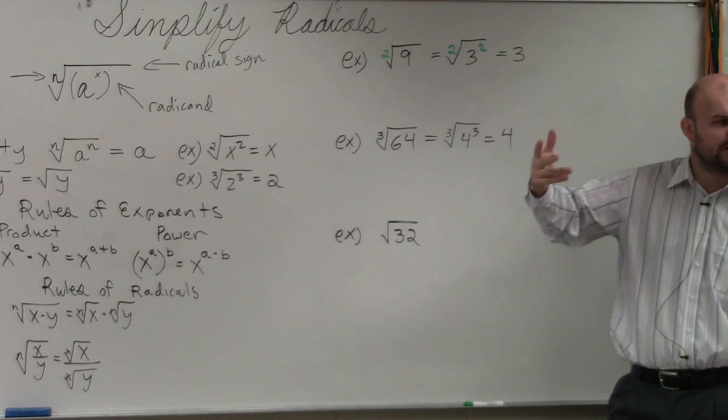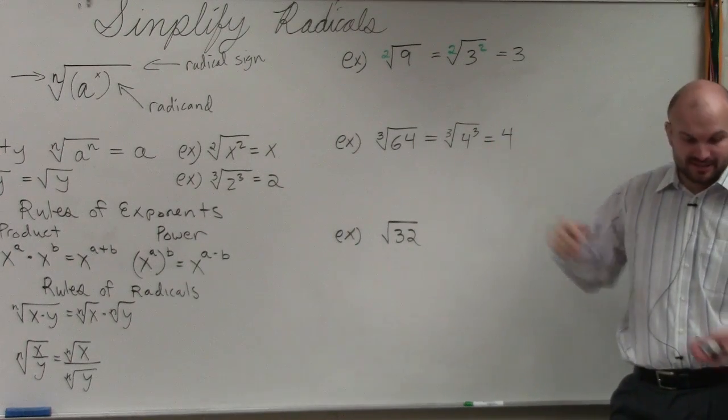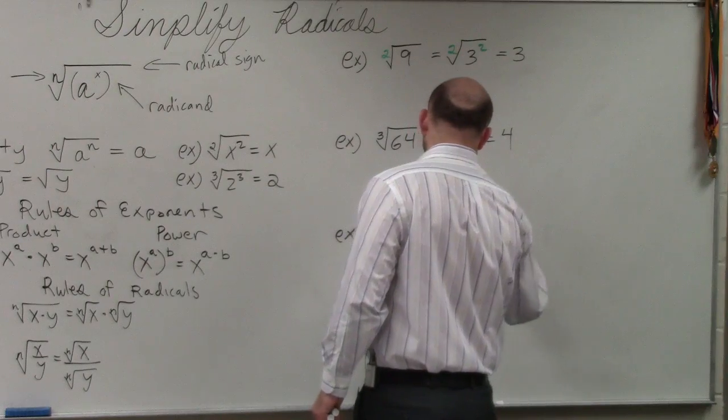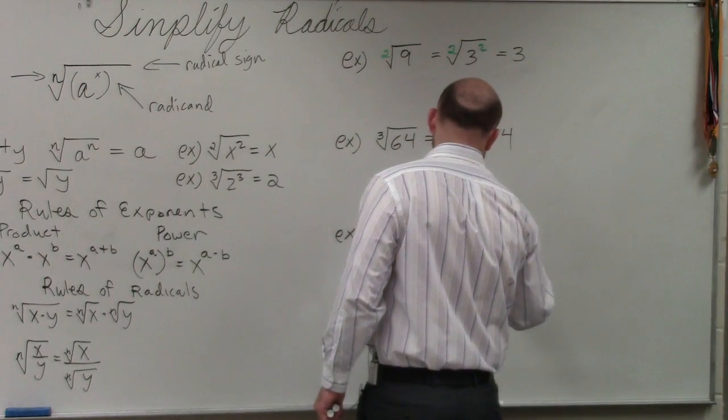You always want to choose the highest square number to make sure it's simplified. 16 is the largest square number, so what I'm going to do is I'm going to break this up into 16 times 2.